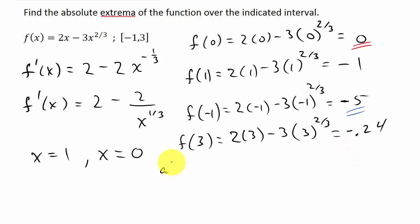So we have an absolute maximum at when x is 0. And when x is 0, y would be what? Well, you have to plug it back into the original. We've already calculated that. So that would be 0, 0.